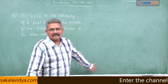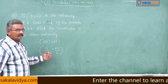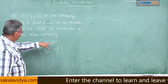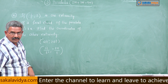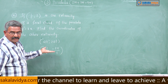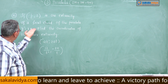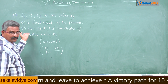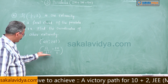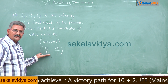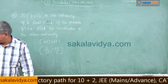The other extremity is (a/t², -2a/t). We equate (1/2, 2) to (at², 2at), get the t value, derive the a value from the parabola, substitute here, and get the other extremity — that is all. Let us do it.